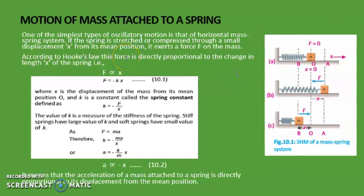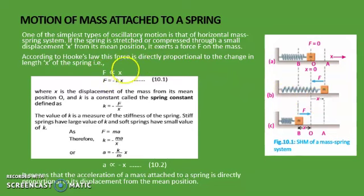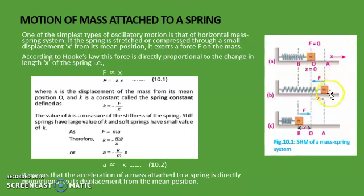According to Hooke's Law, the force is directly proportional to the change in length — length here means the distance. There are two types of forces in this case. One force is the applied force, which we apply. When we release that object, the applied force ceases and ends. But then another force appears which tends to move that object towards its mean position — we call this force the restoring force. When the body is moving leftward due to compression, there is again a force which tends to move the object towards the mean position — again called the restoring force.